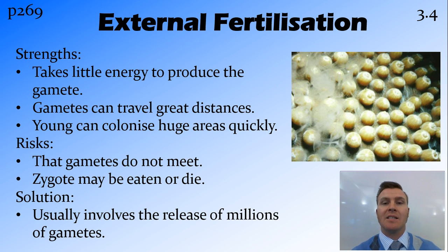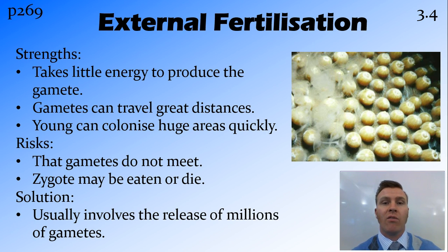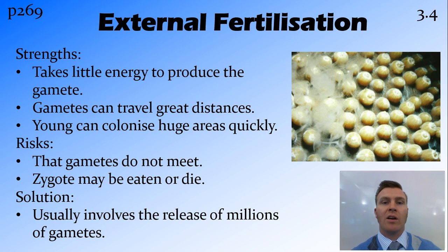The risk, on the other hand, is that the gametes don't meet. While it's a good thing that the tides move those gametes or zygotes around, if the tide takes the eggs in one direction and the sperm in another, that's going to be a problem. Another issue is that there is no protection for either the gametes or the zygotes — they could be eaten or die. So usually what happens is that millions of gametes are released into the water, just so that the numbers favor a fair few of those gametes actually finding each other and creating a zygote.